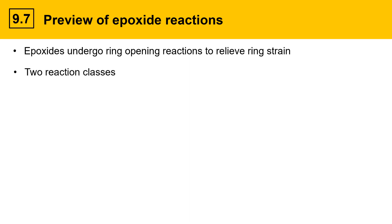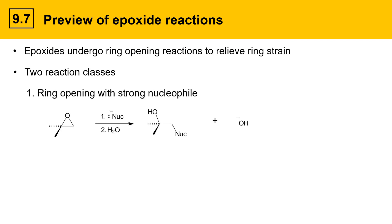There are two reaction classes that we'll look at with epoxides. The first is ring openings with strong nucleophiles. A general example is shown here with an epoxide in the reactants reacting with a strong nucleophile to give a ring-opened species.